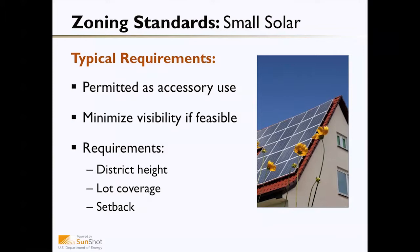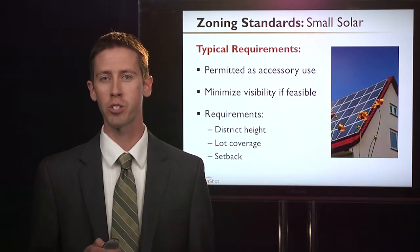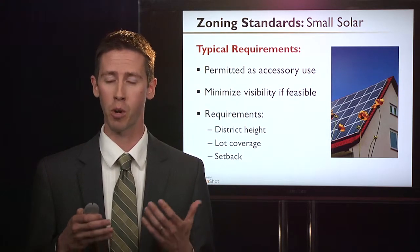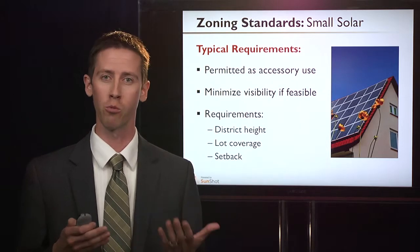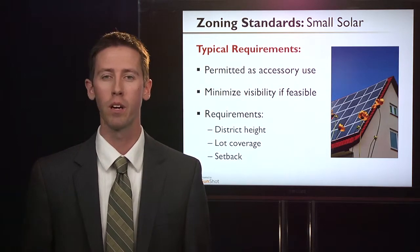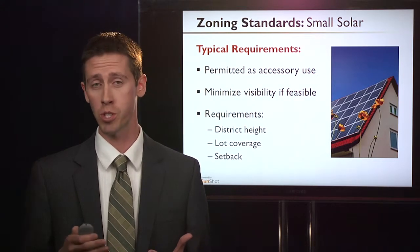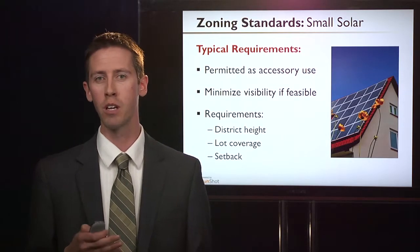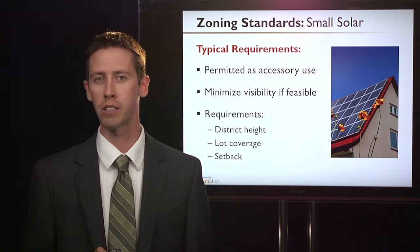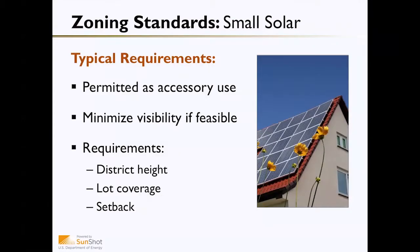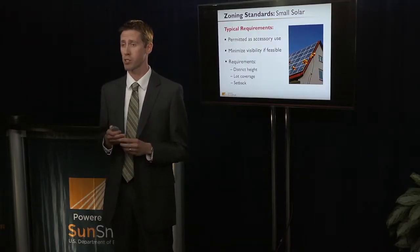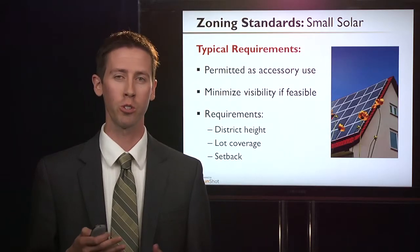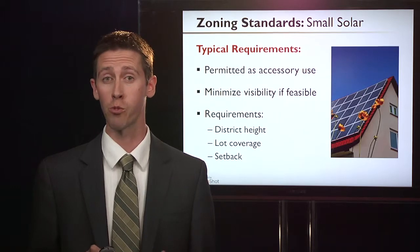The majority of systems installed in a community are generally small systems, typically permitted as an accessory use. The property is primarily used for other purposes, with a rooftop system supplementing the energy used by the home. In most cases, 85% of all rooftop systems are the same or similar in design and function, which can help streamline the process and fast-track zoning standards. You may want to minimize visual impacts and consider where the system is located, while ensuring homeowners can take advantage of south-facing roof space. Different dimensional requirements may apply in historic districts.